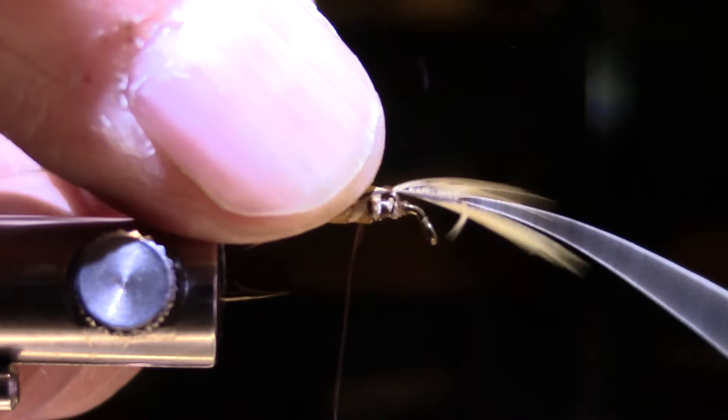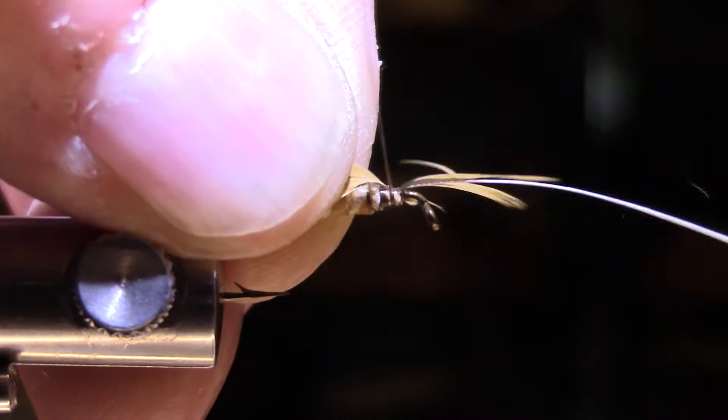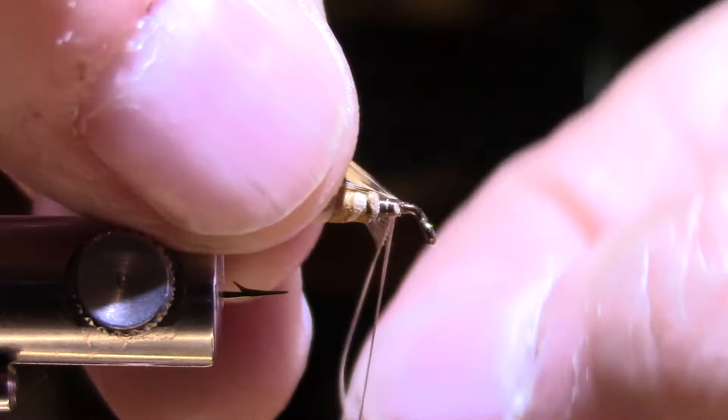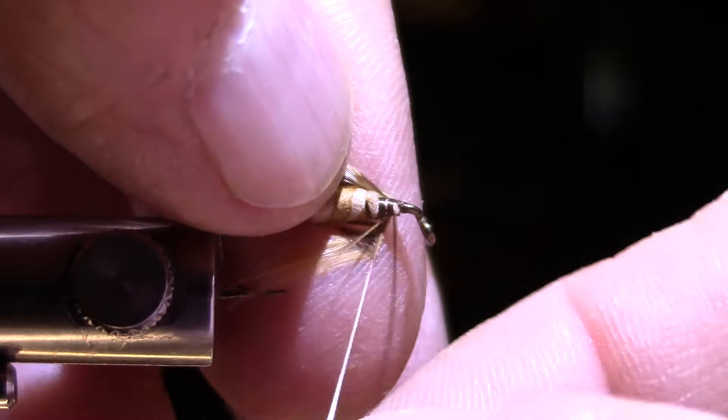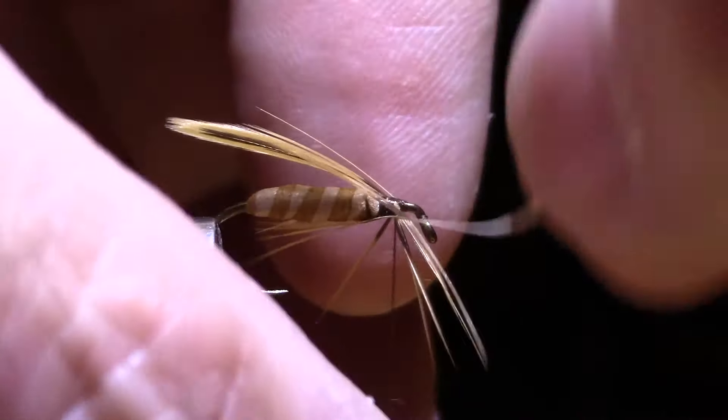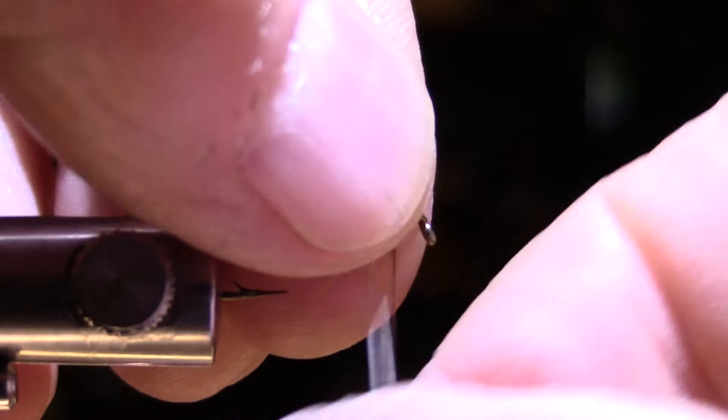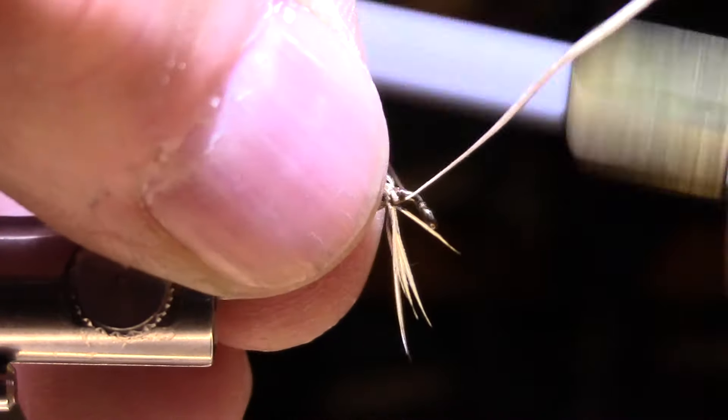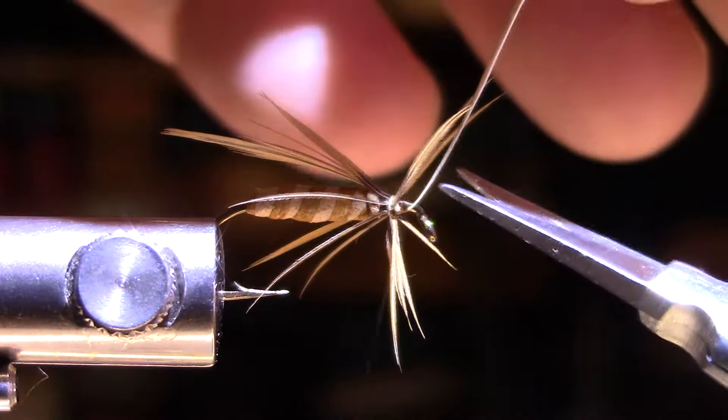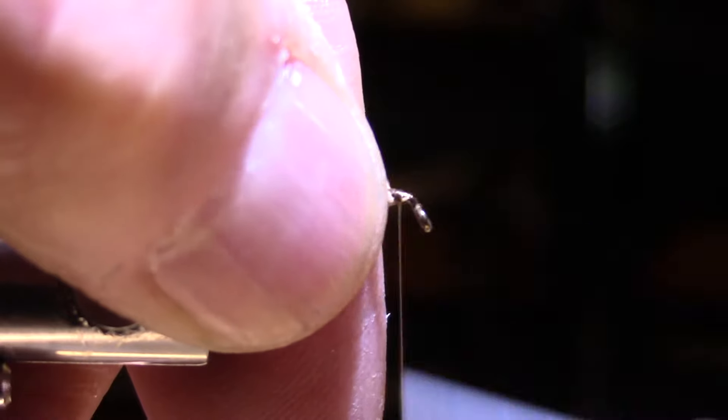So make sure that feather stays on top in the middle, a couple solid wraps. Grab my feather, sweep all this to the back. A couple wraps around and just tie that off. Okay, let's just push all those hackle fibers to the back.